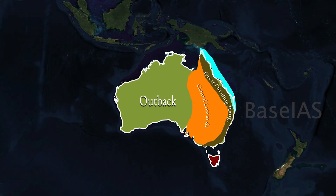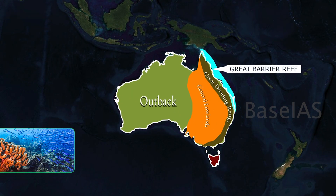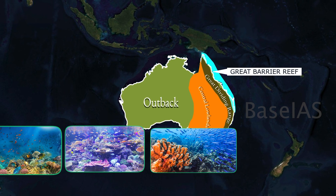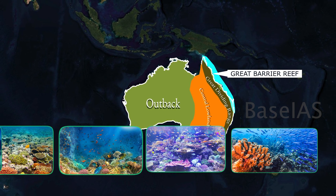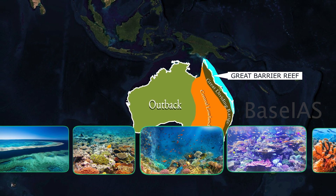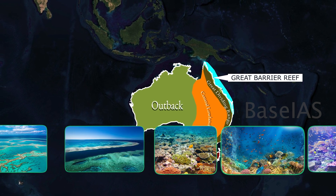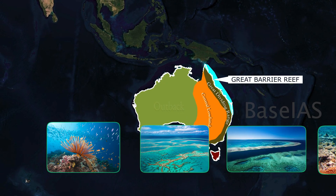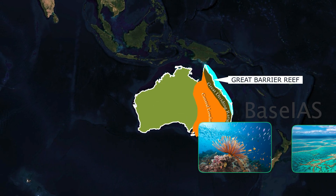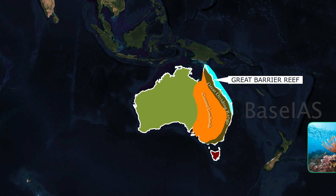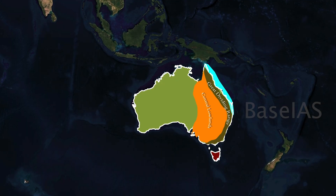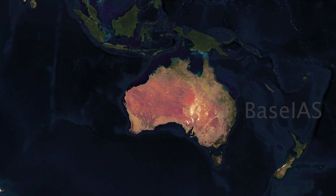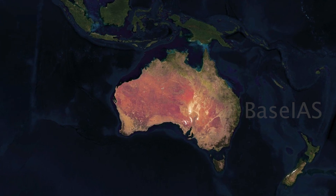The next division is the Great Barrier Reef, one of Australia's most famous natural wonders. It is located off the northeastern coast along Queensland and is the largest coral reef system in the world. It is a UNESCO World Heritage Site, home to thousands of marine species, and crucial for tourism and marine biodiversity.